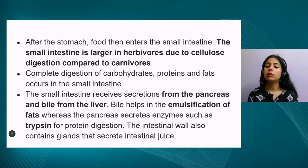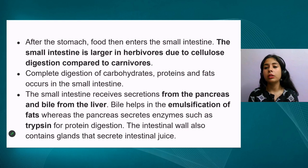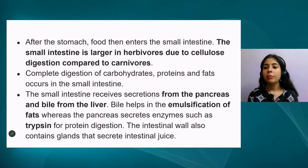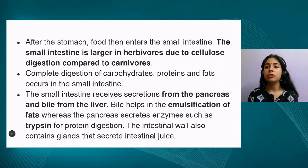The food then moves to the small intestine, where the complete digestion of food takes place. The small intestine is larger in herbivores compared to carnivores. This is because herbivores consume green plants which contain cellulose — a carbohydrate that is difficult to digest — so they need a longer small intestine for proper cellulose digestion. Carnivores do not consume as much cellulose.